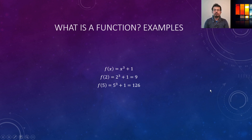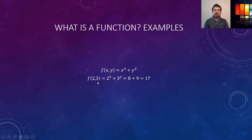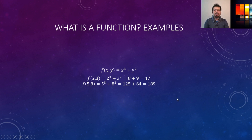The previous examples were for a single input, but we can have multiple inputs in a function too. For a two-input function, we have x and y both as inputs, and the function evaluates x³ + y². If x = 2 and y = 3, it calculates to 17. If x = 5 and y = 8, it evaluates to 189. We can have multiple inputs and also multiple outputs, which we will see later in this video.